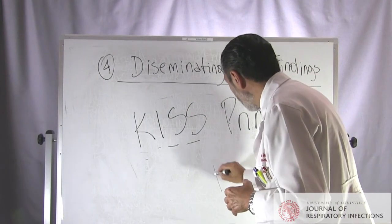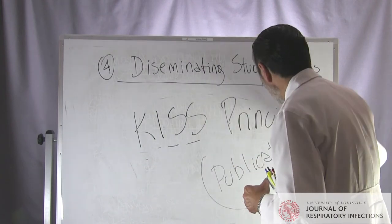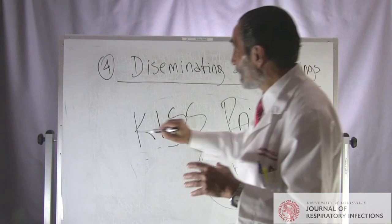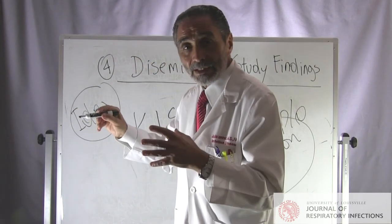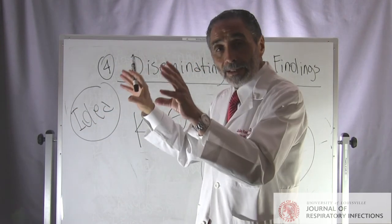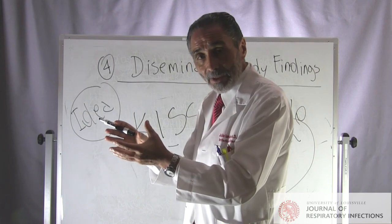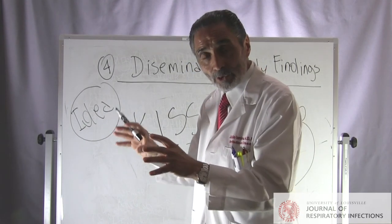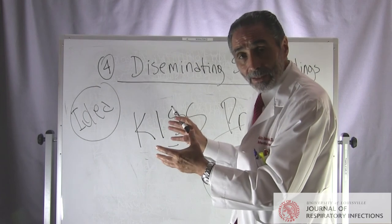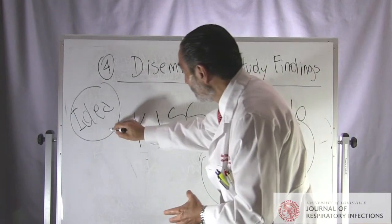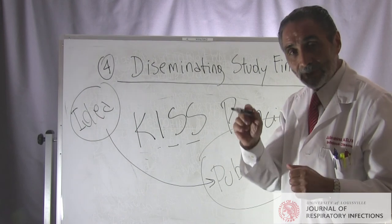This is how we disseminate study findings — with a publication in a peer-reviewed journal, accepted by our peers. So we started with an idea, formed a research question, planned the study, performed the study finishing with a database, did statistical and clinical analysis arriving at conclusions, wrote a manuscript, and ended with a publication. That is what we discussed today: step by step, from idea to publication, the process of clinical research. Thank you very much.